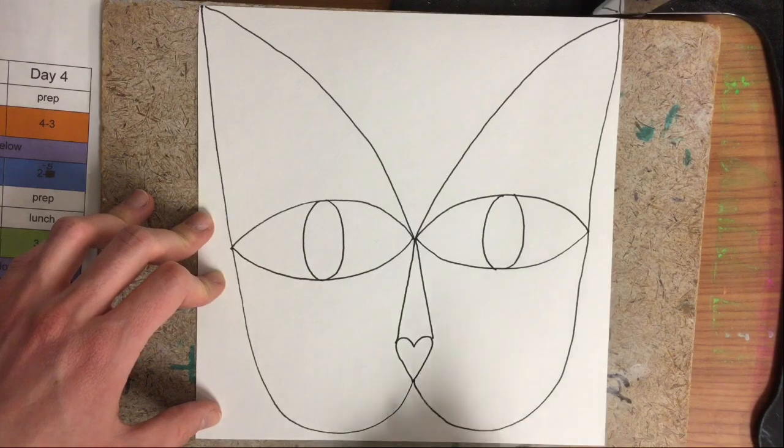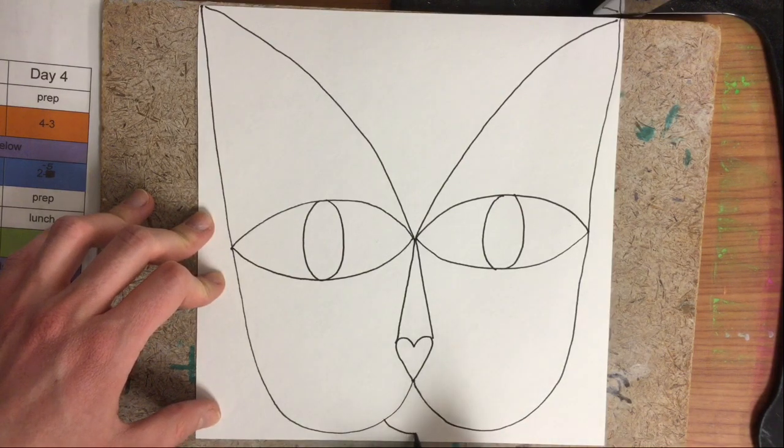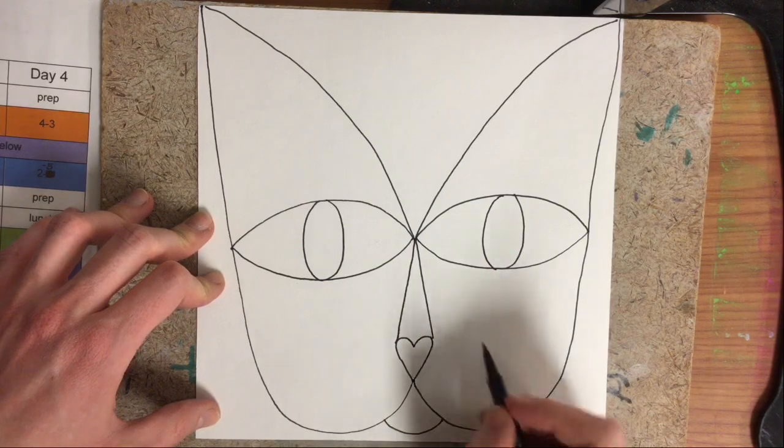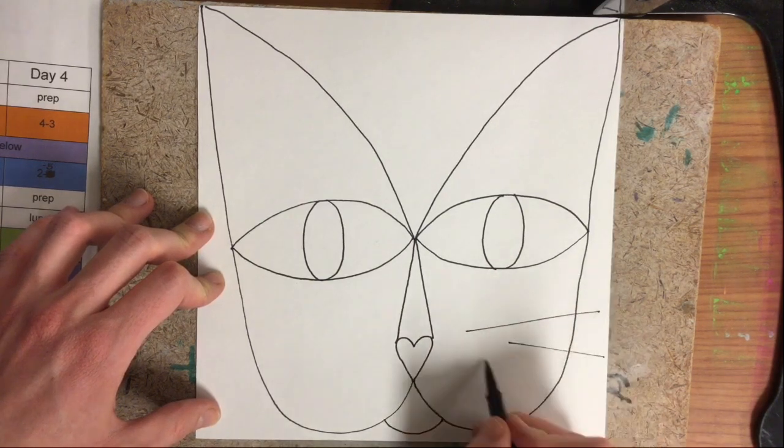Last for our cat, we need a little curve down here for the mouth, and to make it extra cute you can add a couple of whiskers.